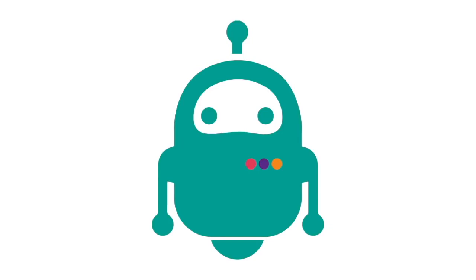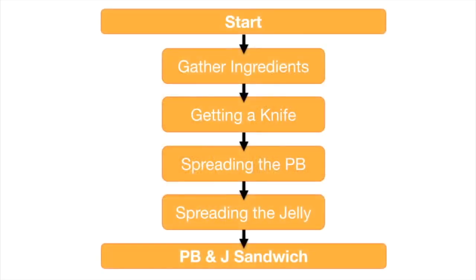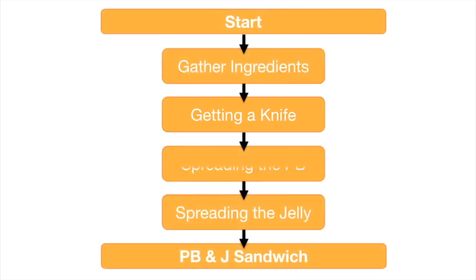If we wanted a robot to make a peanut butter and jelly sandwich for us, we would need to make sure we gave the robot instructions in the correct order. If we didn't do this, we could potentially miss a step, have a missing ingredient, or end up with an inside-out peanut butter and jelly sandwich. In programming, computers can only carry out tasks that are in the correct order.